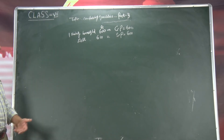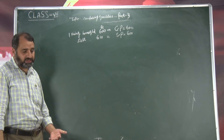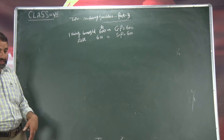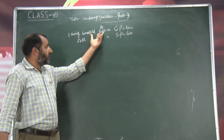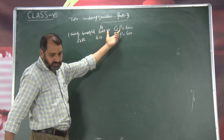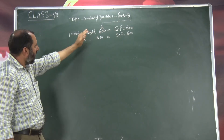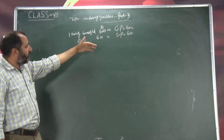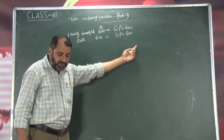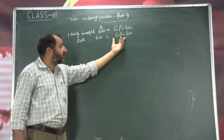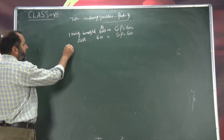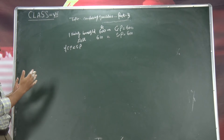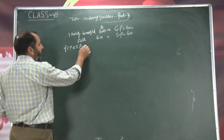Hum matlab price ke lihaas se quantities ko compare karte hai. Ismein profit dekhti hai, ismein loss dekhti hai. Jo cheez jitne mein humne kharid liya hai, isko hum kehti hai cost price — math mein CP. Agar humne koi bhi cheez bought kiya hai 600 rupees mein, to CP means 600. Isi cheez ko humne bheej diya hai 610 mein — to 610 is equal to SP. If CP less than SP — agar CP, SP se kam hoga — then you made a profit, wahaan aya hai profit.